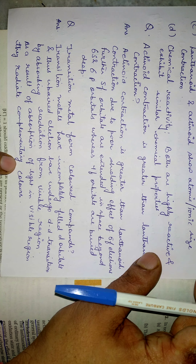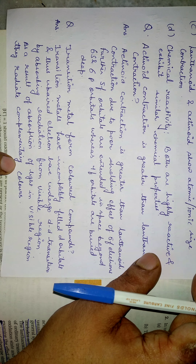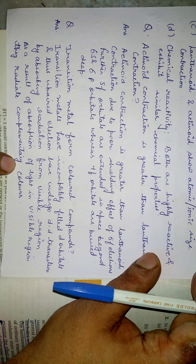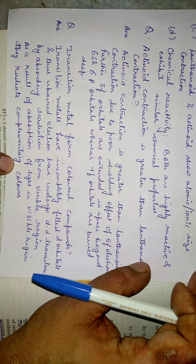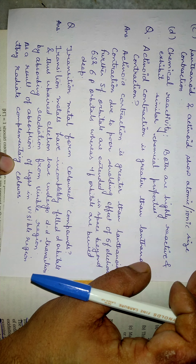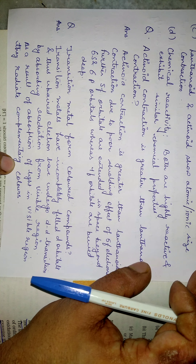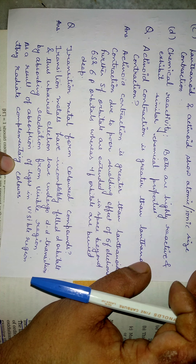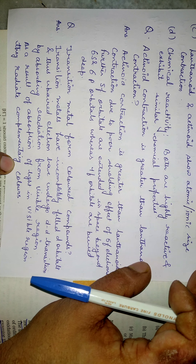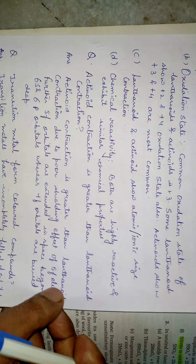Last question: why do transition metals form colored compounds? Transition metals have incompletely filled d orbitals and thus unpaired electrons that undergo d-d transitions by absorbing radiation from the visible region. As a result of this absorption of light from the visible region, they radiate complementary colors. You can take a snapshot of these questions and write down all the answers.